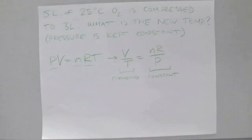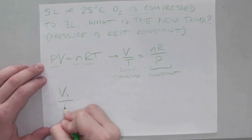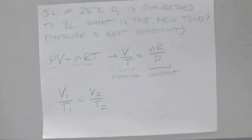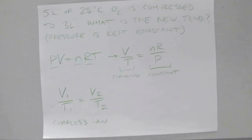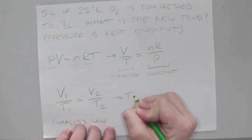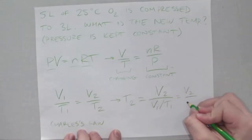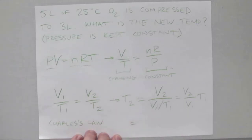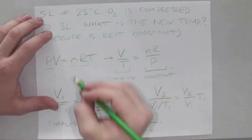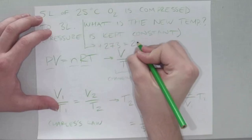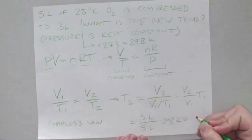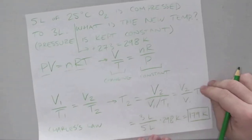We call the current states V1 and T1, and the future states V2 and T2. This gives us Charles' Law, which states that the proportion between volume and temperature is linear. Rearranging to find T2: T2 = (V2/V1) × T1. Plugging in: (3 L / 5 L) × 298 K (since 25°C + 273 = 298 K) leaves us with 179 Kelvin as the final temperature after compression.